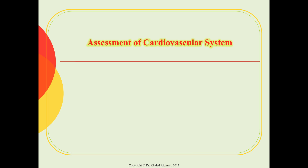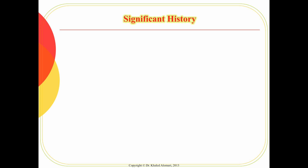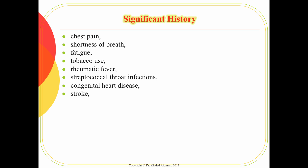Let's talk about the assessment of the cardiovascular system. When you have a patient with cardiovascular issues, you need to look at their history and what is significant and correlates to the history of this patient. A common complaint that brings patients to the hospital is chest pain, also shortness of breath. Cardiovascular and pulmonary are always connected, so when there's a problem with one, you'll see manifestation of the other. Fatigue and tobacco use are also important.